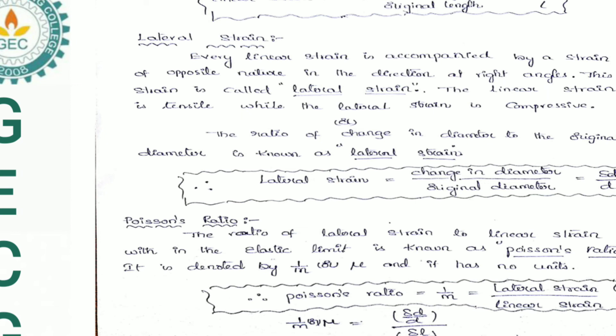Next, an important topic: what is Poisson's ratio? The ratio of lateral strain to the linear strain within the elastic limit is known as Poisson's ratio. It is denoted by 1/m or mu, and has no units. Finally, Poisson's ratio = 1/m = lateral strain / linear strain = (δd/d) / (δl/l).